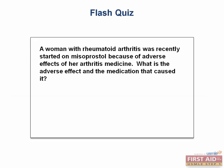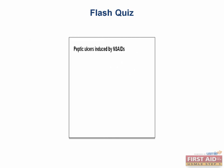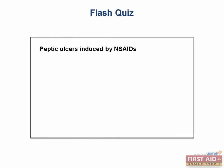A woman with rheumatoid arthritis was recently started on misoprostol because of adverse effects of her arthritis medicine. What is the adverse effect and the medication that caused it? The most likely adverse effect is peptic ulcers induced by NSAIDs. NSAIDs block the production of prostaglandins through inhibition of COX-1 and COX-2 enzymes. While this is good for rheumatoid arthritis, this hurts the stomach lining since prostaglandins normally act on parietal cells to inhibit stomach acid secretion.